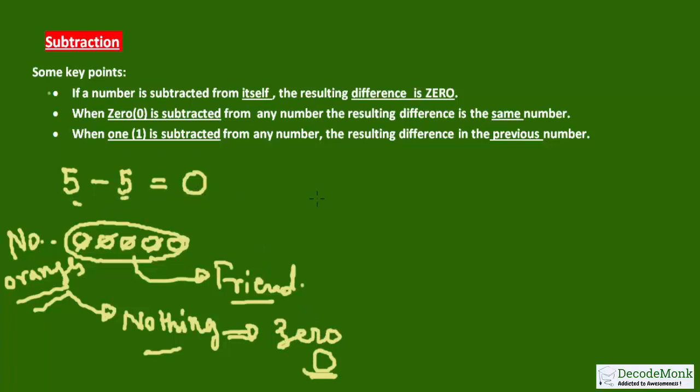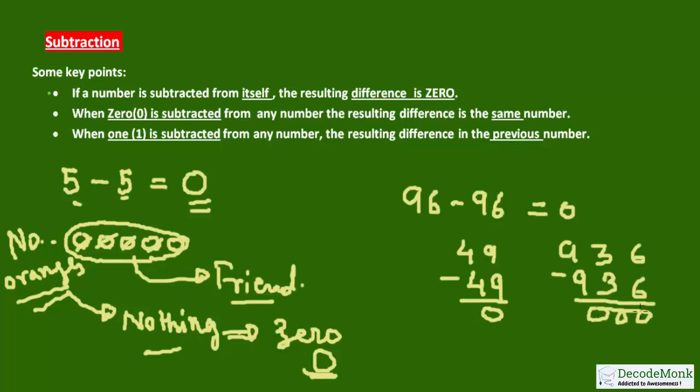This no oranges means nothing, and nothing means big zero. So if a number is subtracted from itself, the resulting difference is always 0. It may be any number: 96 minus 96 equals 0, 49 minus 49 will be equal to 0, 936 minus 936 will be equal to 0.